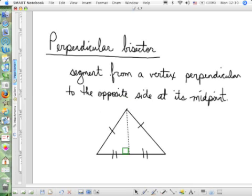Now, what's the perpendicular bisector? That is a segment, a ray, a line, whatever, from the vertex of a triangle.